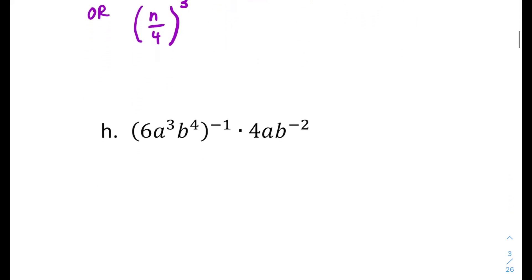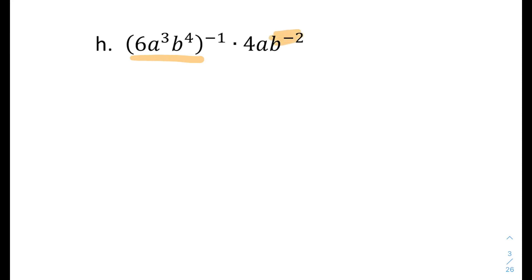One thing that is super important is to make sure you are careful with what the exponent is attached to. So like the first one here, that negative first is on that whole quantity. But on your second term, the only thing raised to the negative second power is b, not the 4a. So I'm going to go ahead and make it 1 over 6a to the third, b to the fourth, and move that b squared to the denominator.